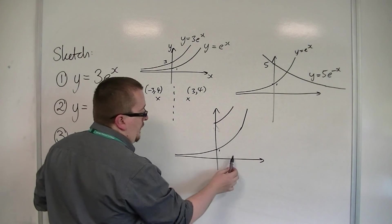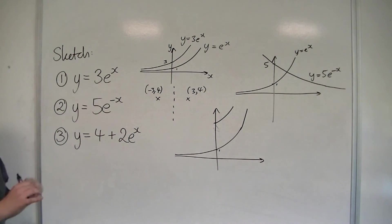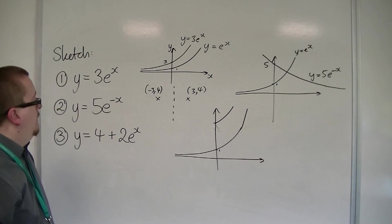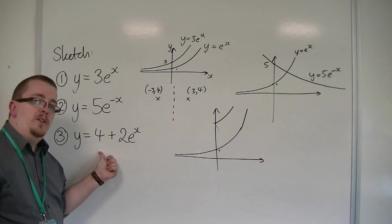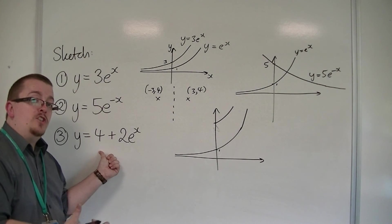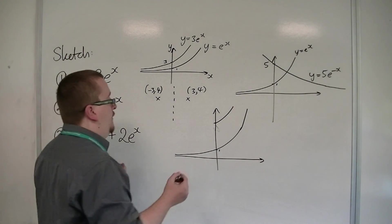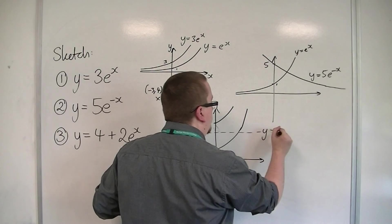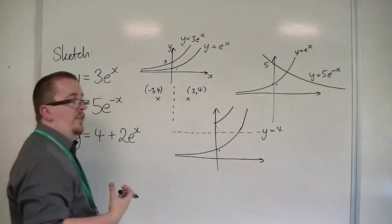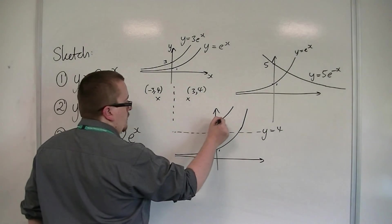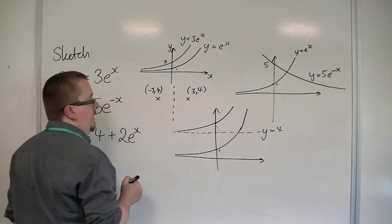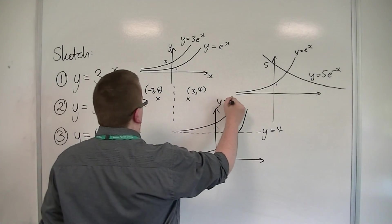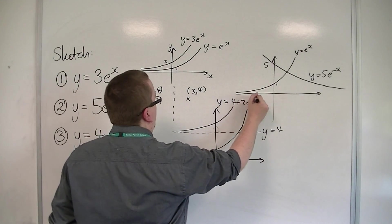Now, this curve had a horizontal asymptote at y = 0. If the whole curve has been translated 4 in the y-direction, so is the asymptote. So there is an asymptote now at y = 4, rather than y = 0. This would be y = 4 + 2e^x.